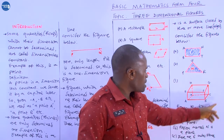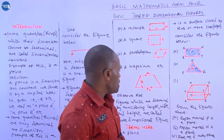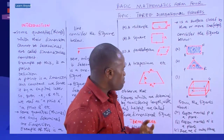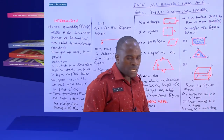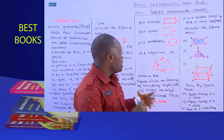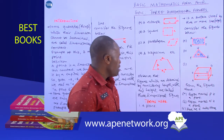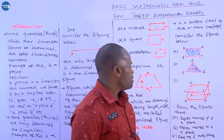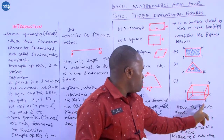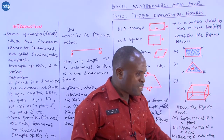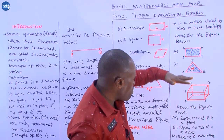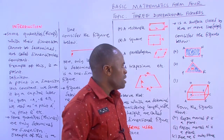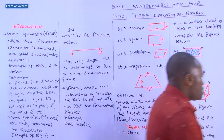For a rectangular prism, there exist six outer planes. There are also planes obtained by sectioning, but we focus on the outer planes. For example, ABCD is a base plane, and EFGH is the top plane of the prism.